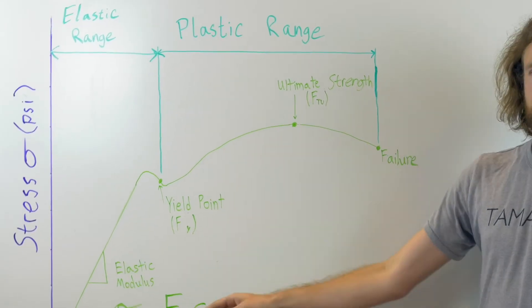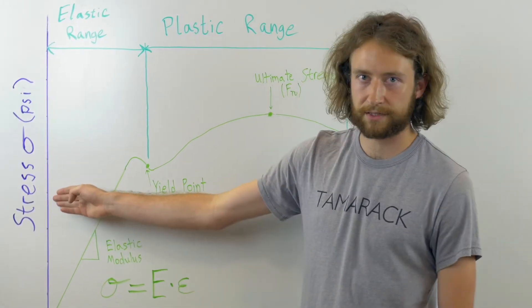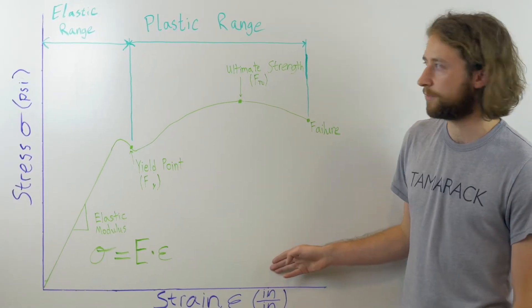What we have here is a typical stress-strain curve for aluminum. On the y-axis we have stress which is a measure of the internal load, and on the x-axis we have strain which is a measure of deformation.